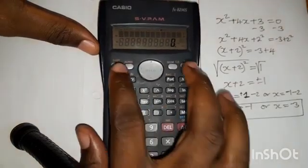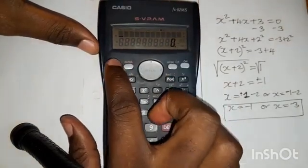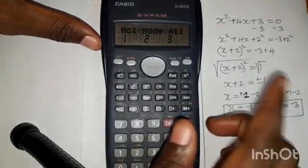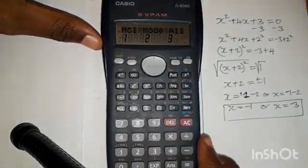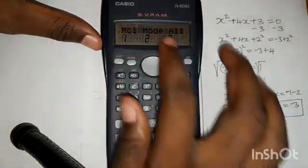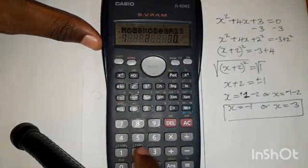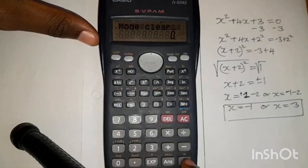Okay, so again, press shift, mode. So in the first place, we pressed three. So let's also clear the mode here. So we press two. So you also press an equal sign twice, one, two.